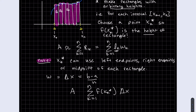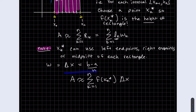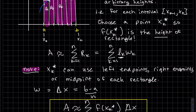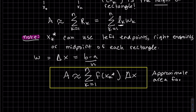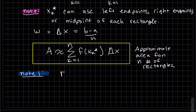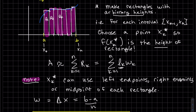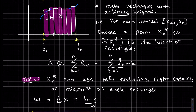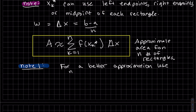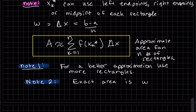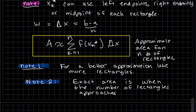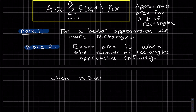This sum gives us the approximate area for n rectangles — it's not exact. Note one: for a better approximation, use more rectangles; each one will have a smaller leftover space. Note two: for the exact area, we let the number of rectangles approach infinity — that is, n approaches infinity.